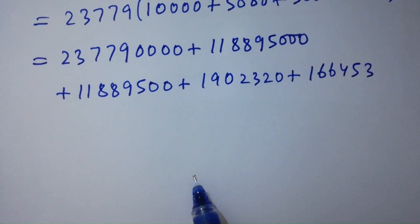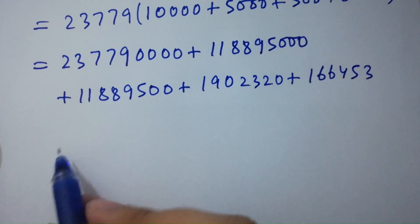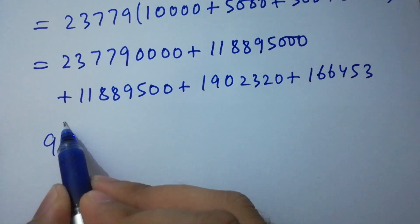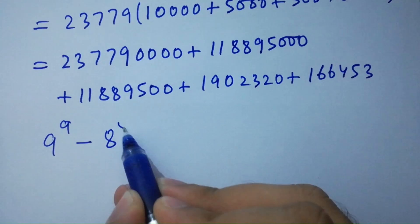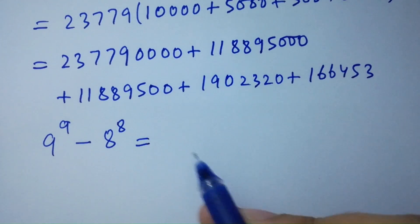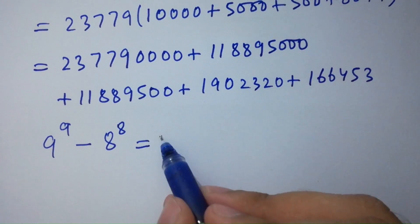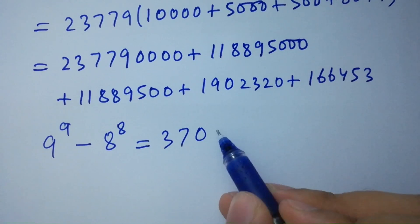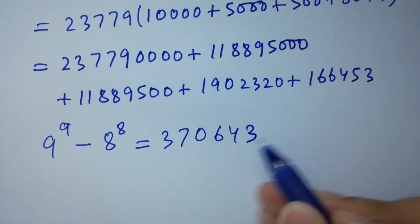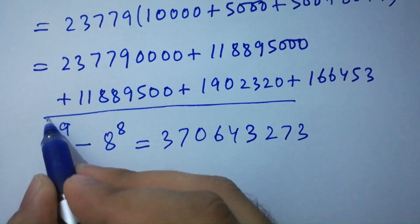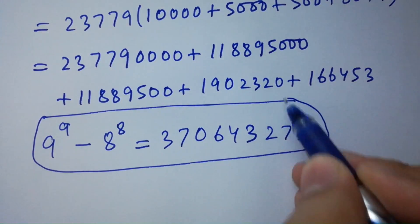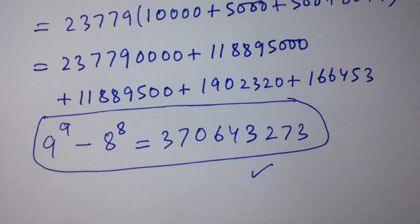So in the last step, by adding them, we have 9 to the power 9 minus 8 to the power 8 equals 370,643,273. So that's our final answer. Thanks for watching this video. Please subscribe to this channel to get notifications of my new videos. Okay, bye.